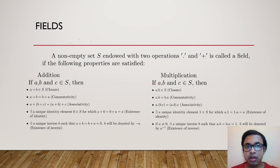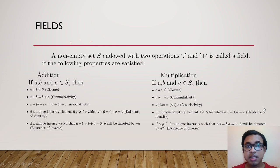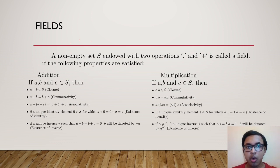For multiplication we cannot include 0 — zero does not have a multiplicative inverse, as we have seen in R and as it must be true in any field. If a is not equal to 0, then there exists a unique inverse b such that a·b equals b·a equals the identity element 1, denoted a inverse or sometimes 1/a.